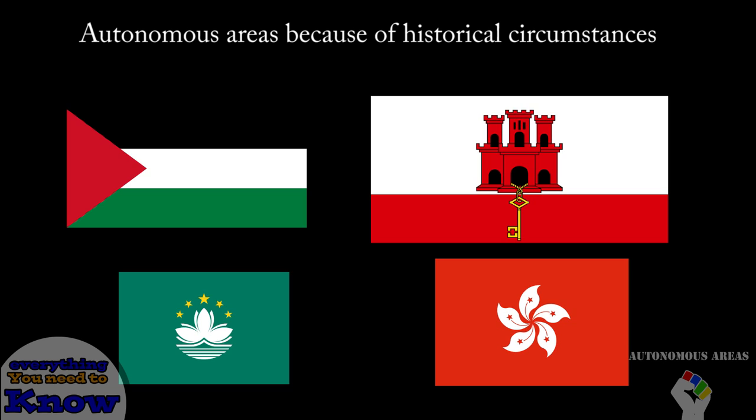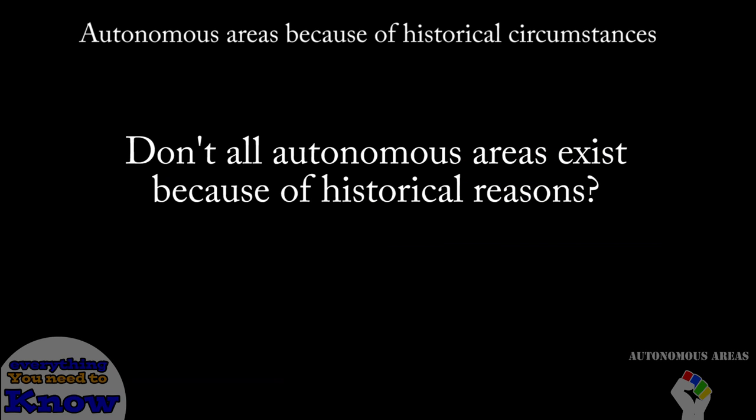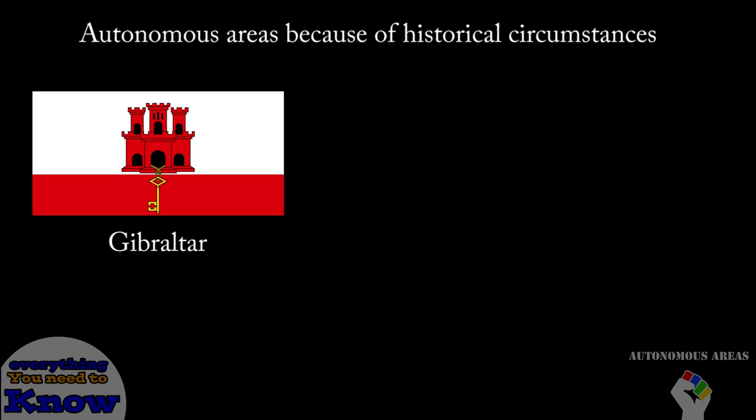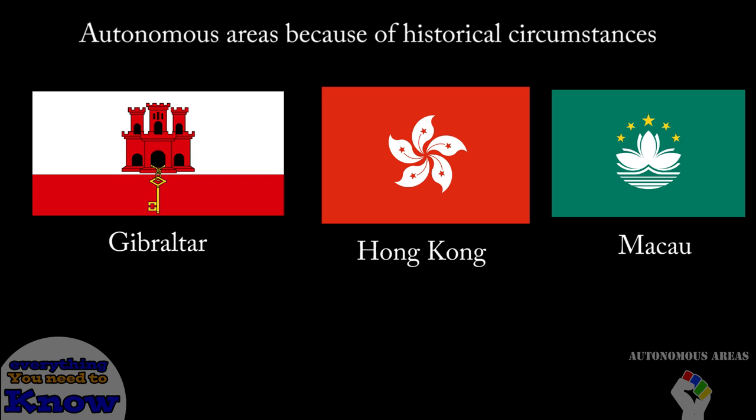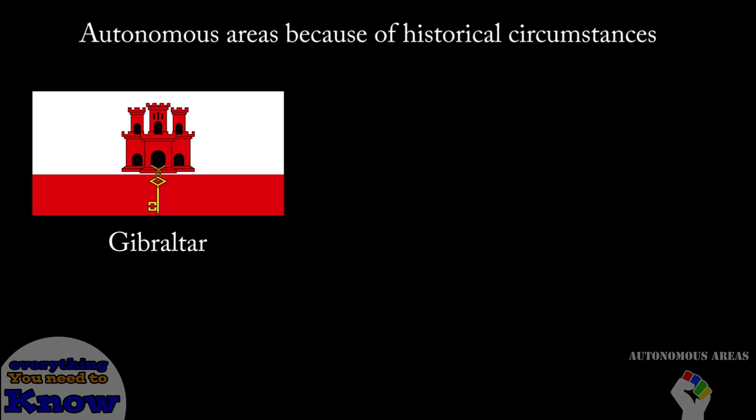So let's talk history. Many autonomous areas are only autonomous because of their historical background. You could debate that all autonomous areas are in their current state because of historical events, but I'm talking about oddities such as Gibraltar, Hong Kong, and Macau. Let's start with Gibraltar.